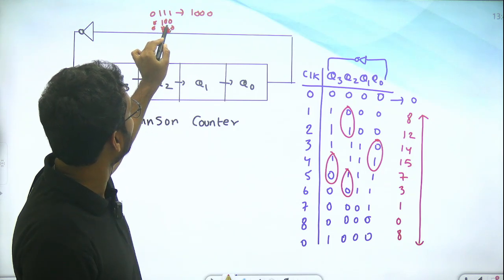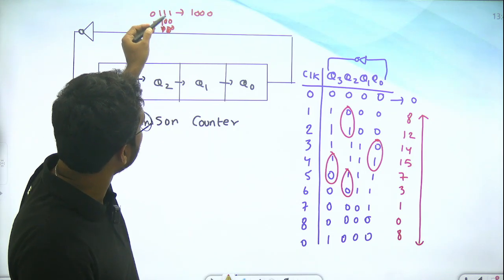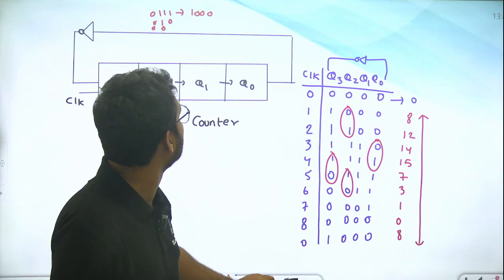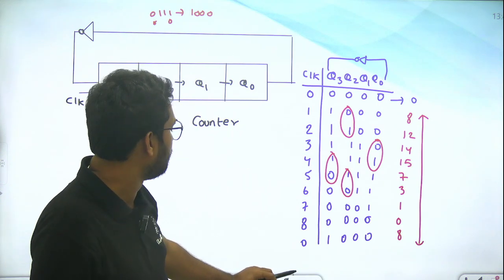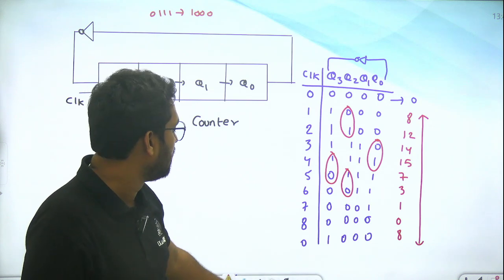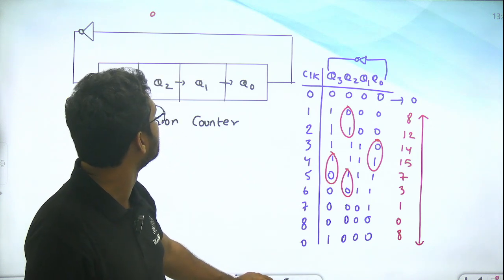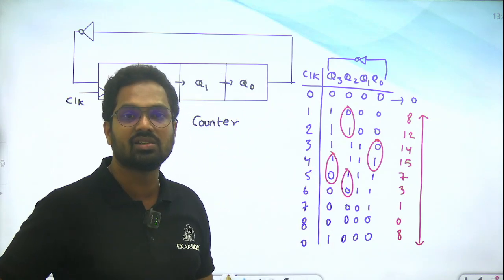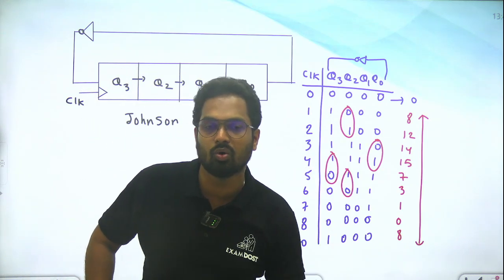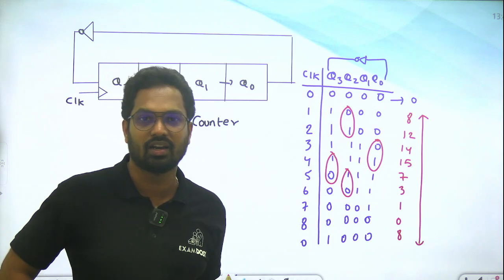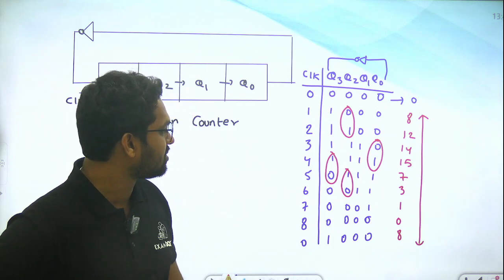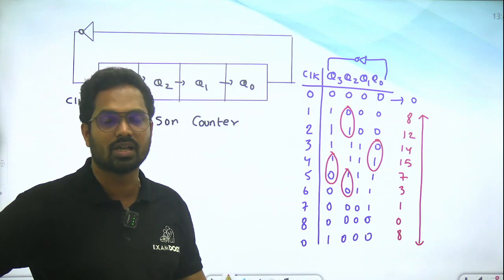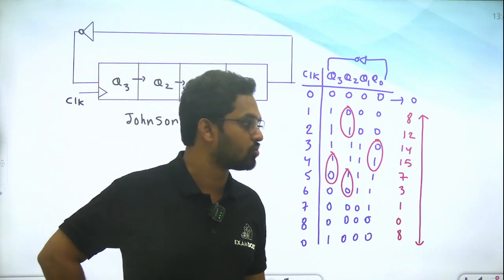In between, errors can happen. But the advantage of this kind of code where only 1-bit changes from one state to the previous is that it is called a unit distance code generator, which avoids errors between one state and the next state — avoiding transient decoding errors. Gray code is an example of a unit distance code, which we will discuss in number systems.